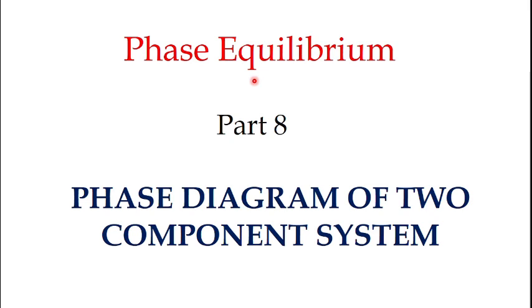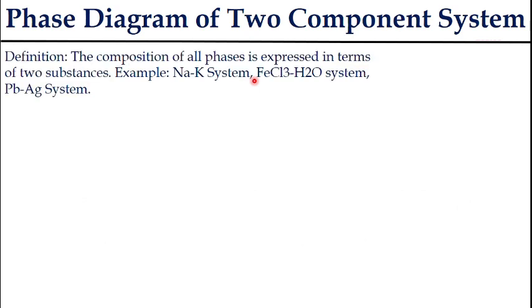Hello everyone, today our lecture is on the phase diagram of two-component systems. This is Part 8 of the phase equilibrium lecture series. I have already discussed phase diagrams of one-component systems — for example, water, carbon dioxide, and sulfur — all three types.